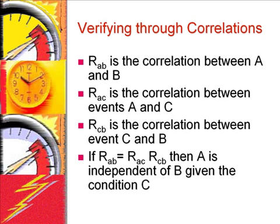One way for verifying independence is to examine their correlations. Two events that are correlated are dependent. For example, we can examine the relationship between age and blood pressure by calculating the correlation between these two variables. If the correlation between the two events, e.g., age and blood pressure, is high, then it suggests that knowing something about one event will tell us a lot about another. Knowing something about the age of the person will tell us a great deal about the blood pressure. Therefore, the two events are dependent.